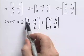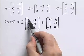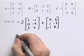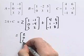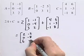We want to multiply this matrix by 2. To do that, you just multiply every entry in the matrix by 2. And so this will give us 2, 0, 6, negative 2, negative 8, 4.